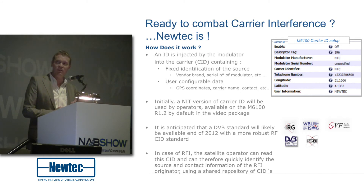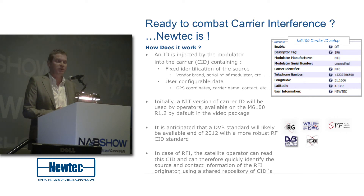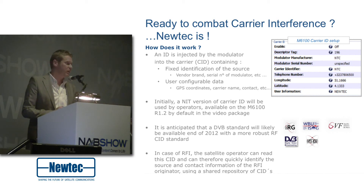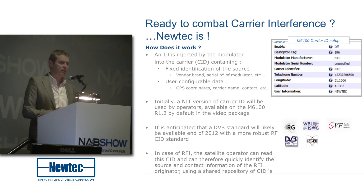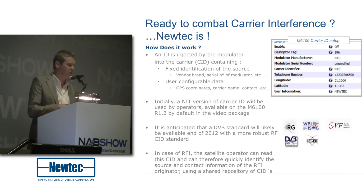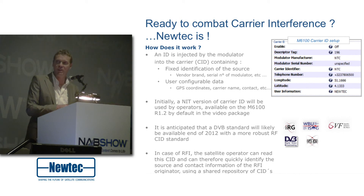That information ideally is put into the carrier, and what can be done with that information, of course, is that when there's an interference happening, the satellite operator can read that information, contact the source of the interference, and resolve the problem. Our initial version is adding some data within the video transport stream within the NIT. And that's available today on modulators.